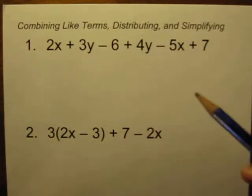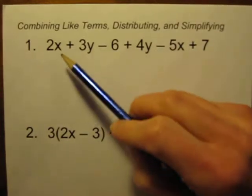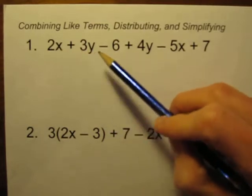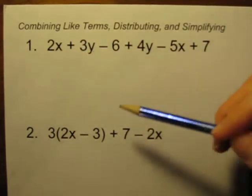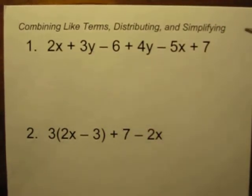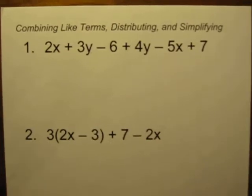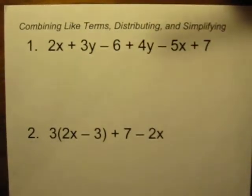The first thing you notice on a problem like this is there's no equal sign, so you can't solve it. You'll never be able to figure out what x equals or what y equals. All we can do is try to shorten this to make it as simple as possible. So let's combine, like it says, the like terms.